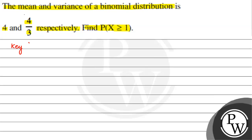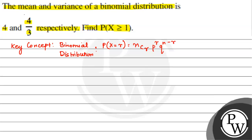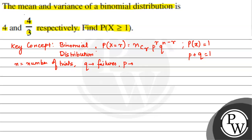Always key concept. The key concept will be binomial distribution, which is: P of X equal to r is equal to nCr multiplied by P to the power r, multiplied by Q to the power n minus r. And we know that P plus Q is equal to 1, where n is the number of trials, Q is the failures, and P are the successes.